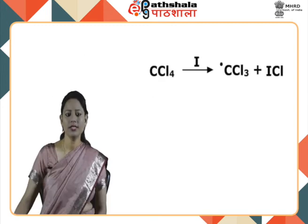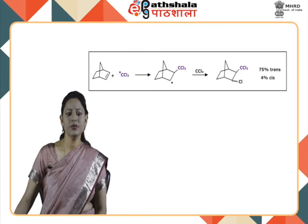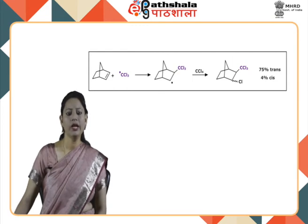Another example is the addition of CCl₄ across the double bond of norbornene, i.e., bicyclo[2.2.1]hept-2-ene. CCl₄ gives a CCl₃ radical, which can react with norbornene to form a compound with 75% trans isomer and only 4% of the cis isomer.